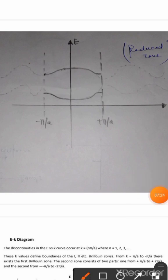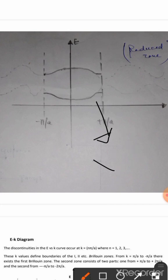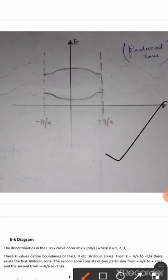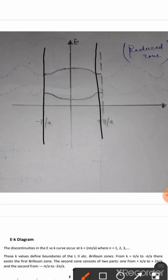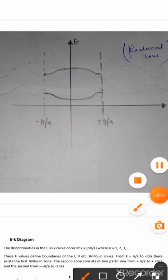Each curve in the E-K diagram is known as a band. This lower one is known as the valence band and the upper one is known as the conduction band. In most books, you see the E-K diagram restricted to this portion only, because it is periodic in nature — if we study only this portion, we can automatically know about the others since it repeats at regular intervals. If you have any doubt regarding the E-K diagram, you can ask in the comment section.